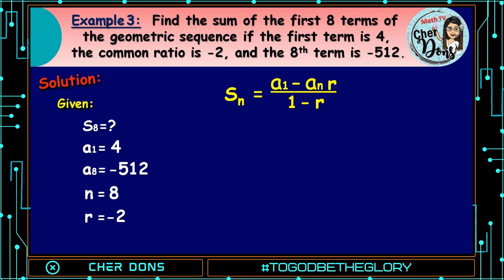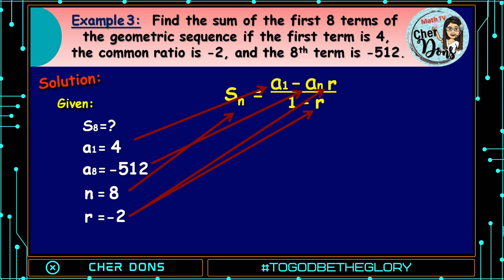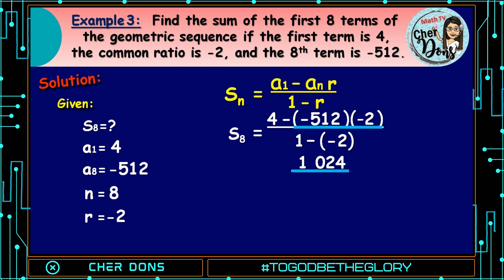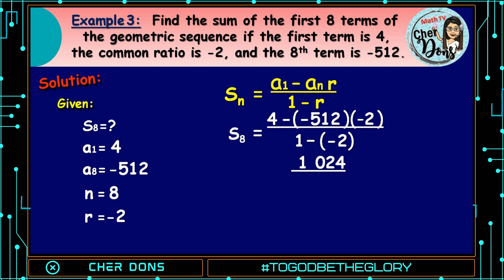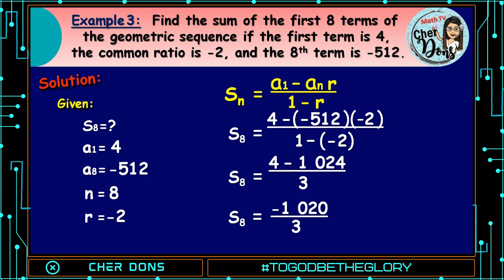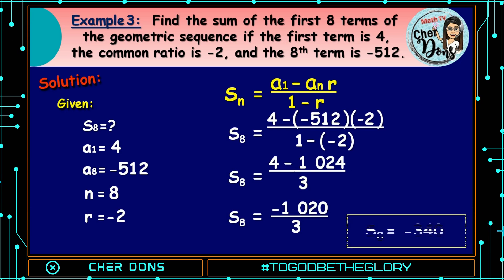Where 4 goes to a sub 1, negative 512 goes to a sub n, 8 goes to n, and negative 2 goes to r. We have S of 8 is equal to 4 minus negative 512 multiplied by negative 2, and that is equal to 1,024, all over 1 minus negative 2. S of 8 is equal to 4 minus 1,024, all over 3. Calculating the value, S of 8 is equal to negative 1,020 divided by 3, it is equal to negative 340. Therefore, the sum of the first 8 terms is negative 340.